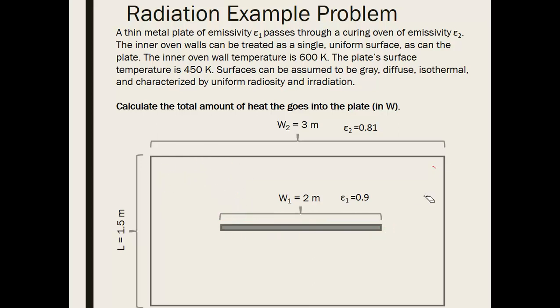So our first step is going to be to calculate the view factors. Remember this surface radiation is a surface to surface phenomenon. So we're going to have this surface radiating to this surface. We're going to assume that if there is air or gas inside this oven that it is transparent to radiation.